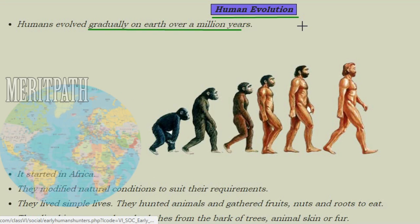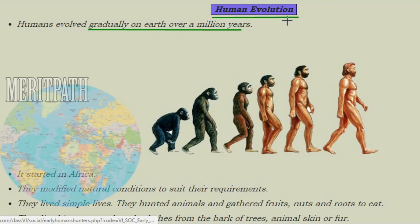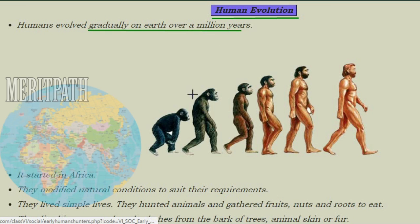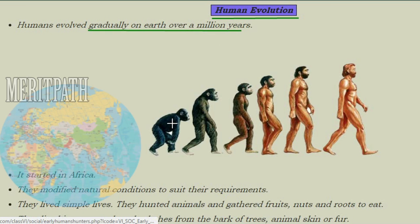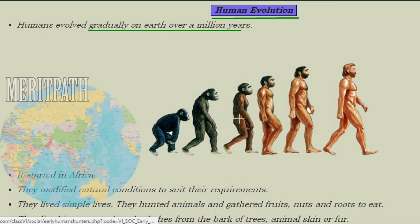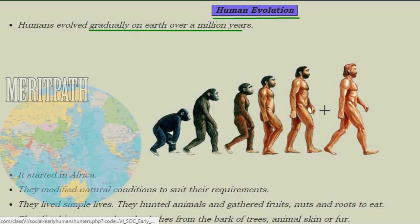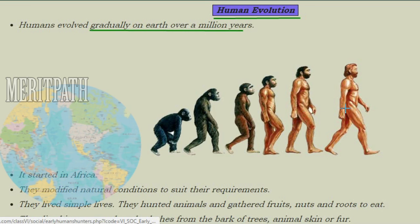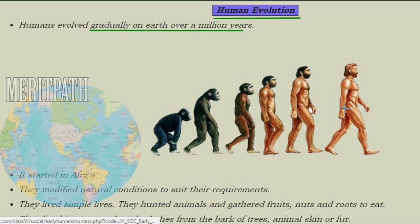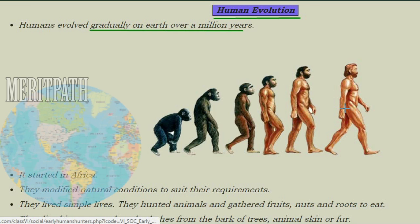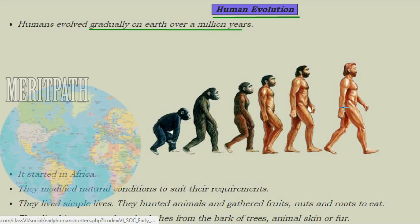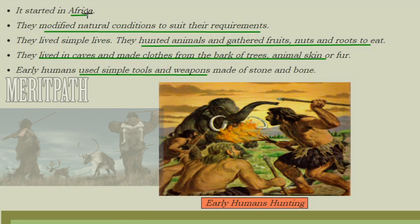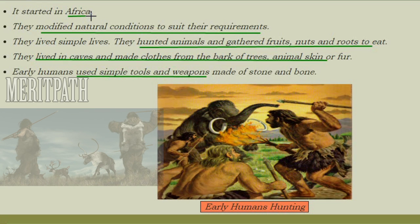Early humans were hunters and gatherers. Human evolution started gradually over a period of millions of years. The first human being looked somewhat like a chimpanzee, and year by year, generation over generation, evolution led to the complete human — Homo sapiens. The scientific name of a human being is Homo sapiens, and this gradual evolution from chimpanzee to human being took over a million years. Humans first evolved in Africa.